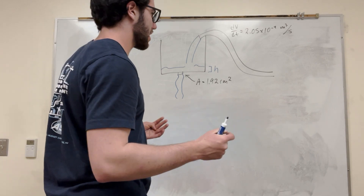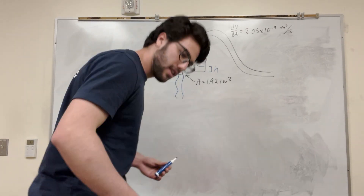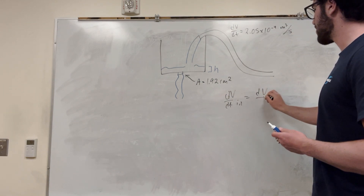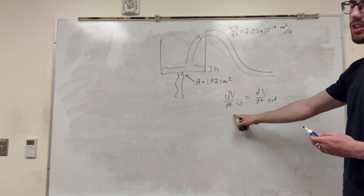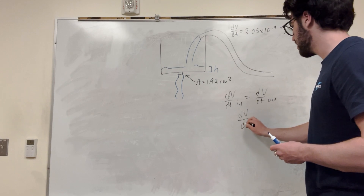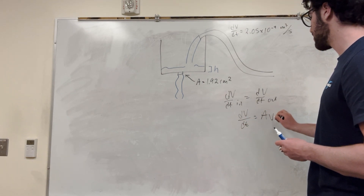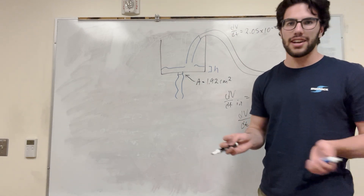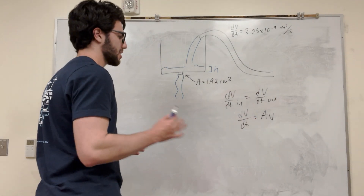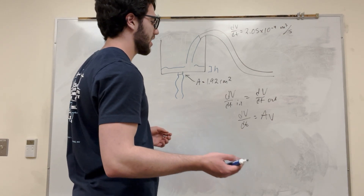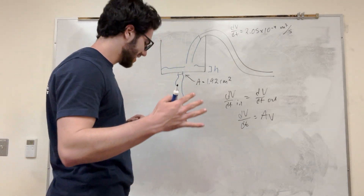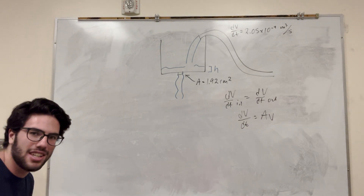So we got a couple things we can say. We're trying to find when dV/dt in is equal to dV/dt out — the rate at which the volume comes in equals the rate at which the volume leaves. We know that dV/dt is equal to the cross-sectional area times the velocity at which it leaves. We're trying to find height, and there's no height in that equation yet — we need height somewhere.